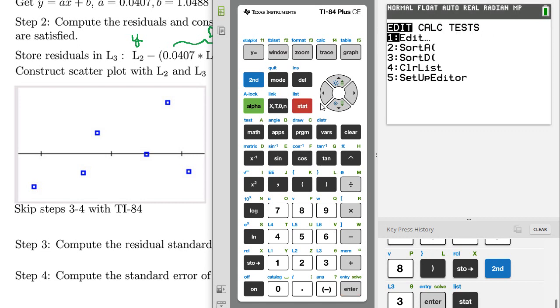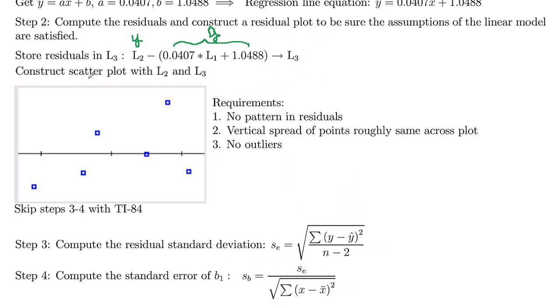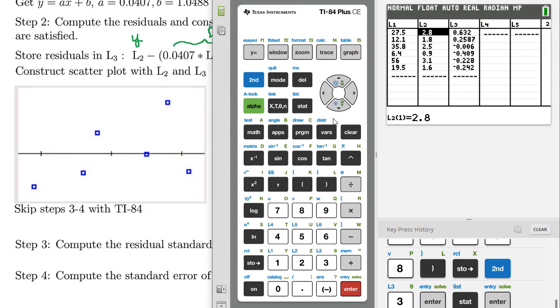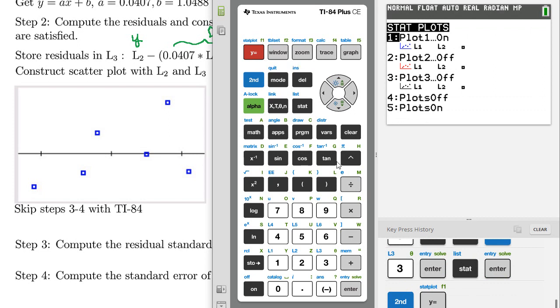And then it'll generate the values in the list. So now if you go to stat and edit, you'll see a third list in there. So those are the residuals. Now what we want to do is construct the scatter plot with list two and list three. So your scatter plot with list two and list three, we are going to do a second white equal, which is your stat plot, and then one is highlighted. It's already on here, but notice it's list one and list two. We want to do it here with list two versus list three.